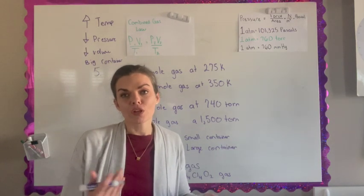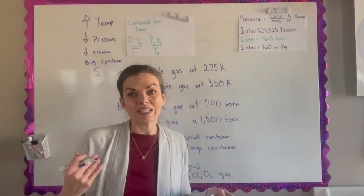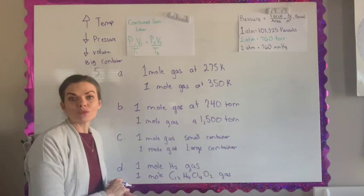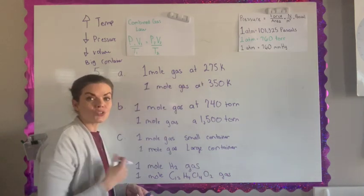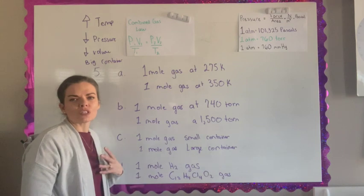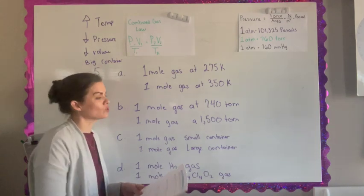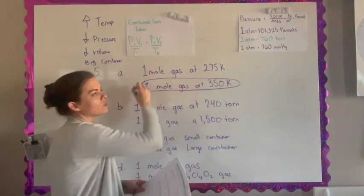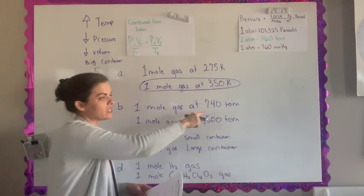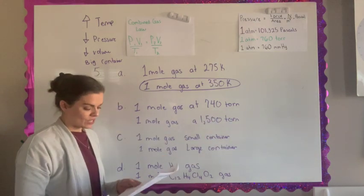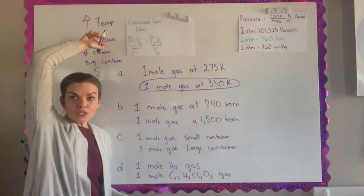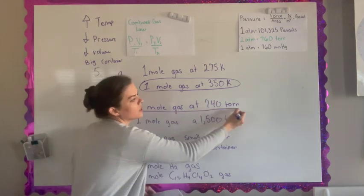We're going to look at two scenarios in each part of this problem, and it wants you to pick the ones that are the most ideally behaved. It tells us every one of them has one mole of gas. So we have one mole of gas at 275 degrees Kelvin and one mole of gas at 350 degrees Kelvin. I know that for it to behave ideally as possible, it needs to be at the highest temperature. So the highest temperature is the one at 350 degrees Kelvin. For the next one, it gives me a mole of gas at pressures. One's at 750 torr and one is at 1500 torr. For my gases to behave as close as possible, I want them to have the lowest pressure. So the one with the lowest pressure is the first choice.